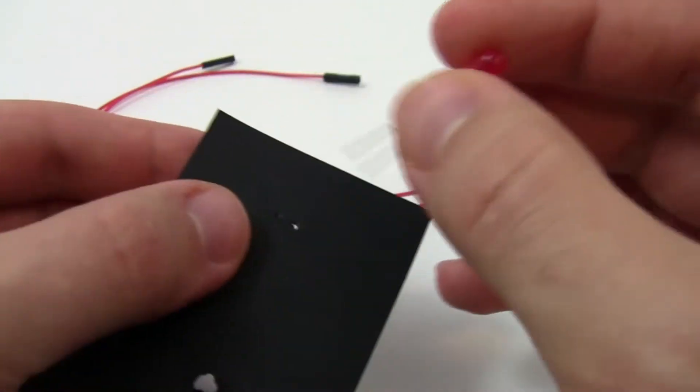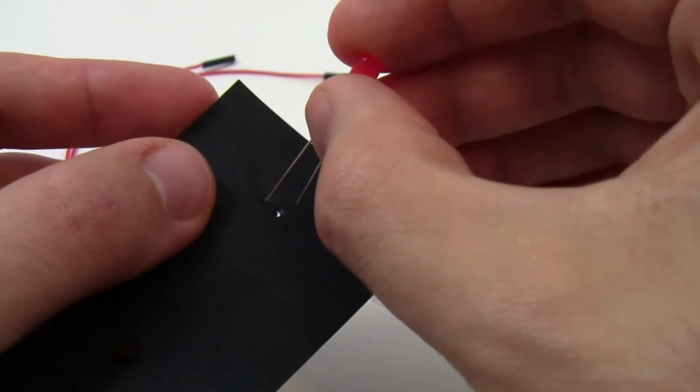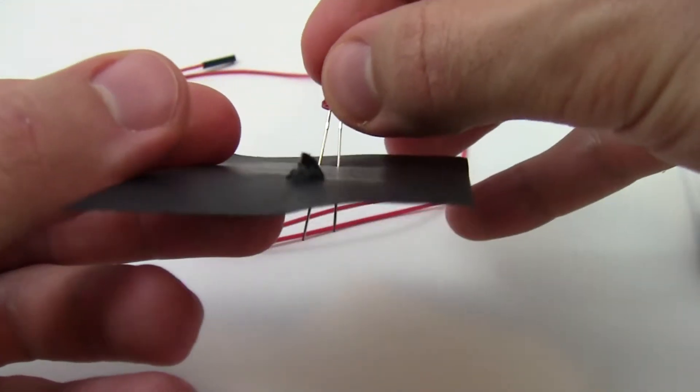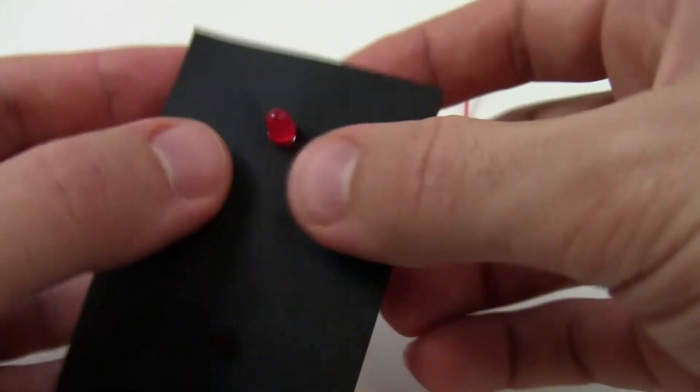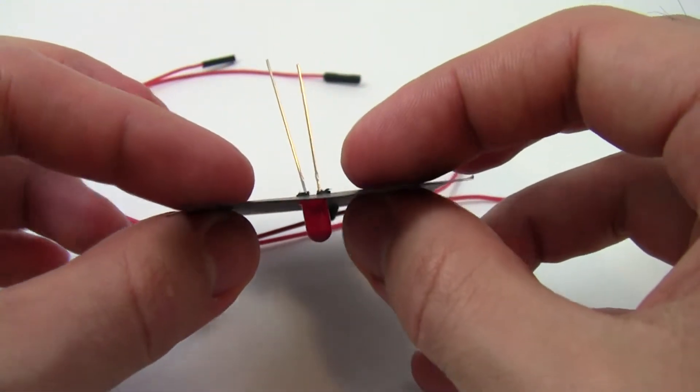The other approach is to poke these two tiny holes and then carefully push the LED's leads through those holes until the LED is sitting flat against the surface and the leads are sticking out the back.